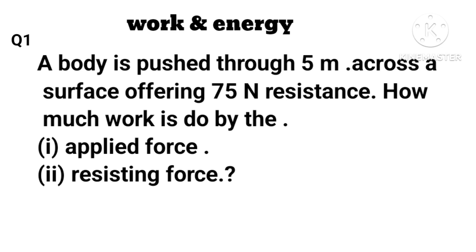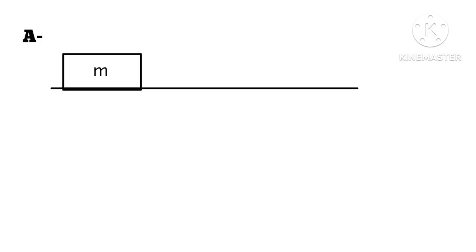A body is pushed through 5 meters across a surface offering 75 N resistance. How much work is done by (i) applied force, (ii) resisting force? Let a body of mass m be pushed through 5 meters by a force F. Therefore, work done by applied force is W = 75 × 5 = 375 J.